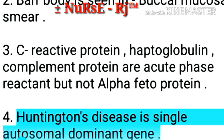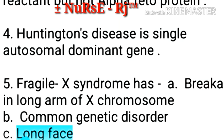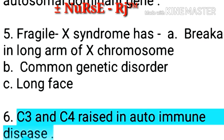Point 4: Huntington's disease is a single autosomal dominant gene disorder. Point 5 & 6: Fragile X syndrome has a breakage in the long arm of X chromosome, is a common genetic disorder, and presents with a long face.